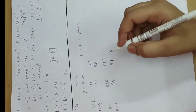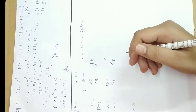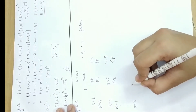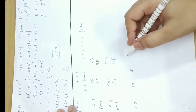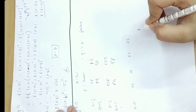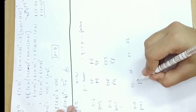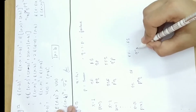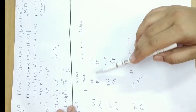Now, going to the general case for x's value: if we have r attempts, then the values are success r times then one failure, or failure r times then one success. So the probability of x equals r is: p to the power r into q, plus q to the power r into p.